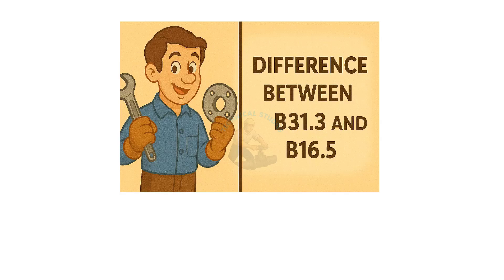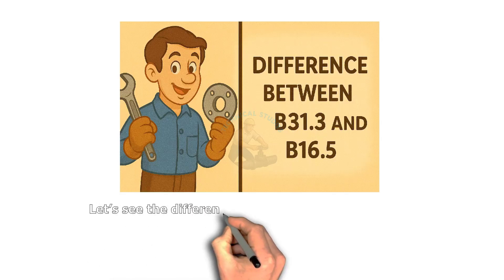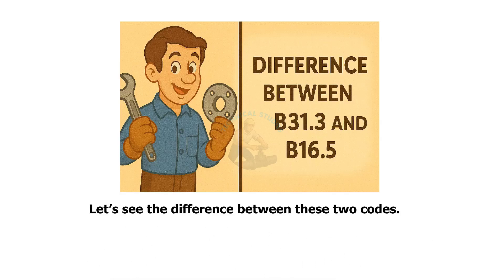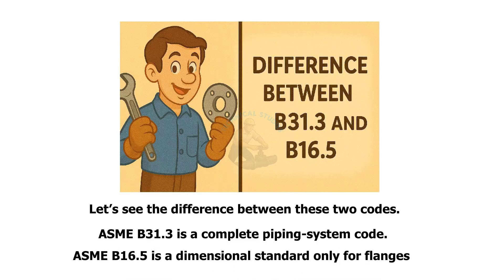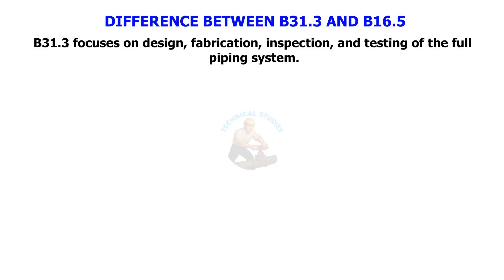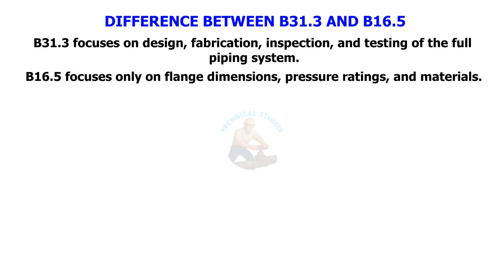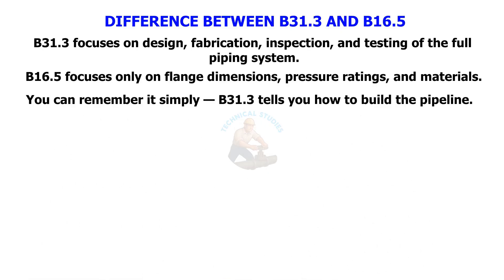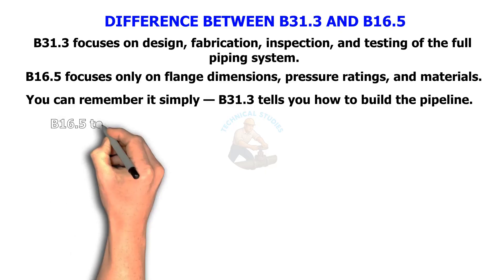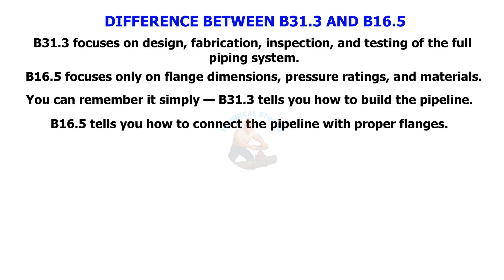What is the difference between B31.3 and B16.5? ASME B31.3 is a complete piping system code, while ASME B16.5 is a dimensional standard only for flanges. B31.3 focuses on design, fabrication, inspection, and testing of the full piping system. B16.5 focuses only on flange dimensions, pressure ratings, and materials. Simply put: B31.3 tells you how to build the pipeline, and B16.5 tells you how to connect the pipeline with proper flanges.